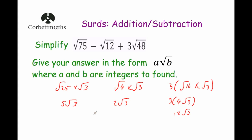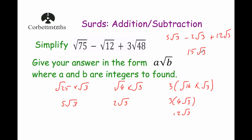Now we work out the answer: 5 Root 3 subtract 2 Root 3 plus 12 Root 3. Working from left to right: 5 Root 3 minus 2 Root 3 is 3 Root 3, then adding 12 Root 3 gives 15 Root 3. So our answer is 15 Root 3.